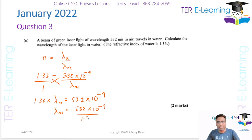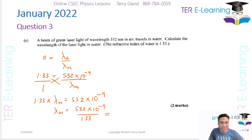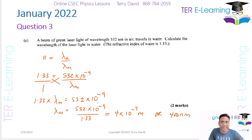That gives me approximately 4.00 × 10⁻⁷ metres, which you can also write as 400 nanometres. Those are two ways to write the same answer — 4 × 10⁻⁷ m is the same as 400 nm. Two marks for that.